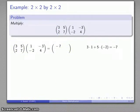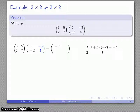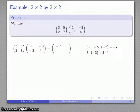And I can find the other entries in the same way. So I'm going to take the first row, multiply by the second column, and multiply and add these terms. First row, second column: 3 times negative 3, 5 times 4. That gets me 11, which is my first row, second column entry in the product.